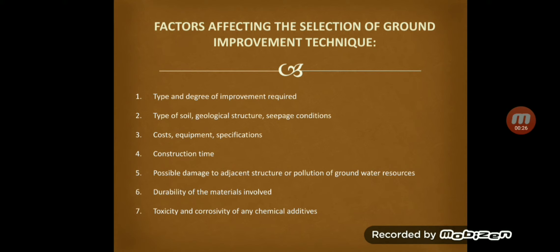Next is the type of soil — type of clay or sand — and foundation role of pore pressure and seepage, etc. Then next is cost and equipment specification: the size of the project, availability of equipment, and transportation cost are included under this.